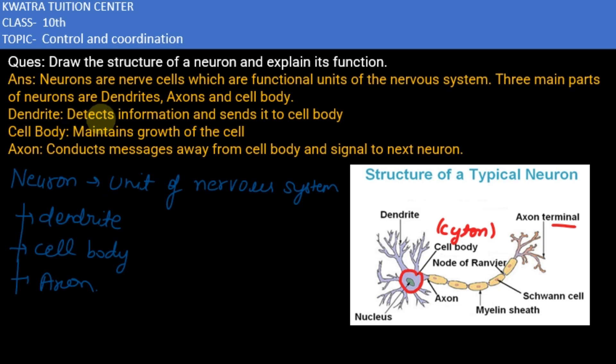First we see the function of dendrite. They detect information and send it to the cell body. They are hair-like structures. Next, cell body maintains growth of the cell. This is the main function of cell body.